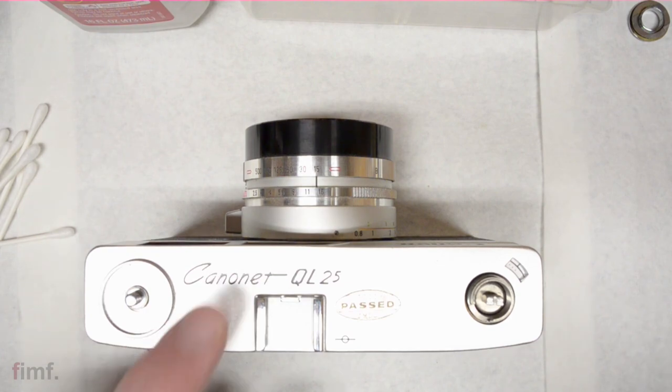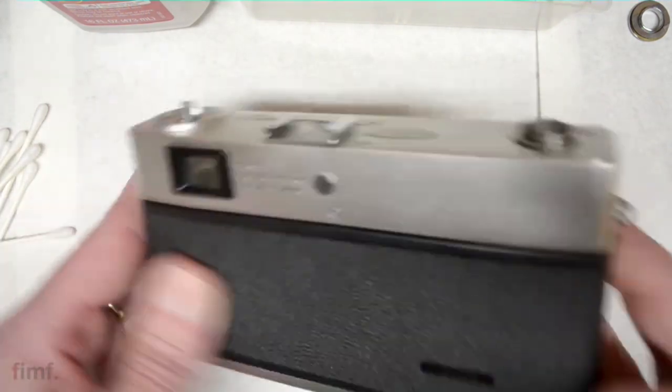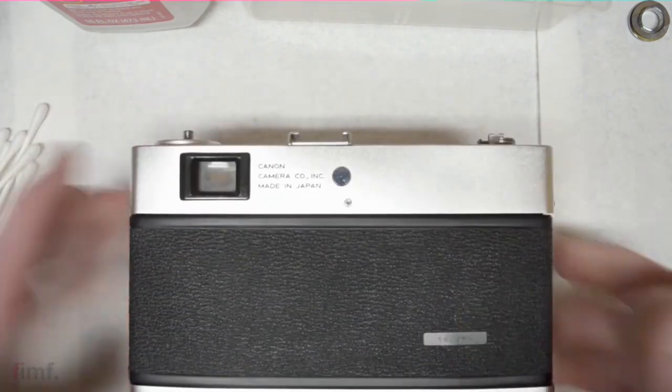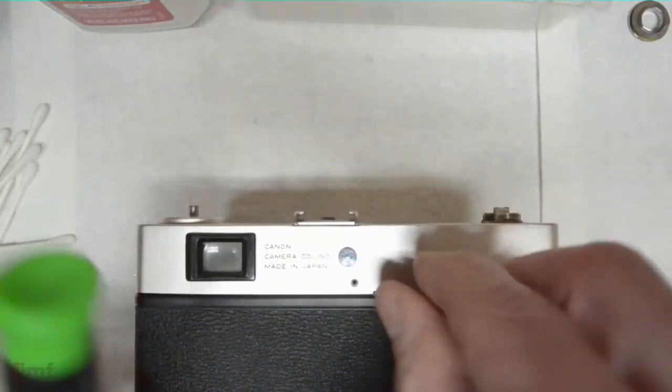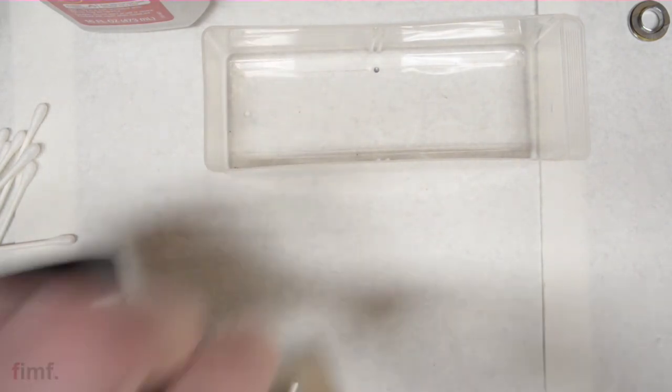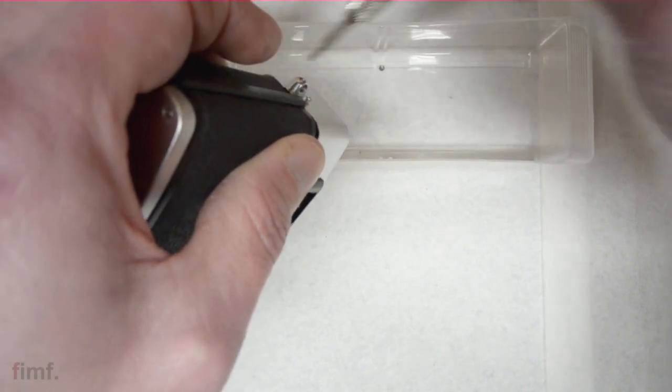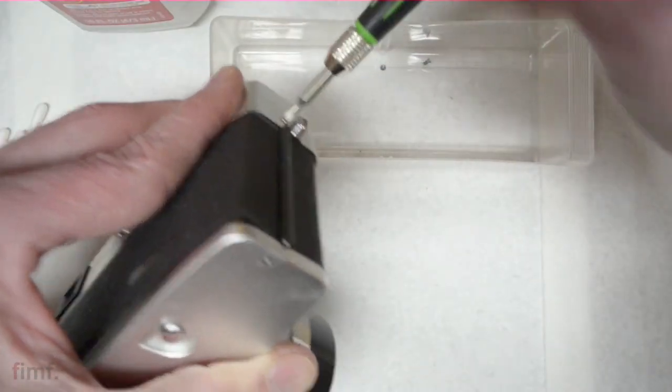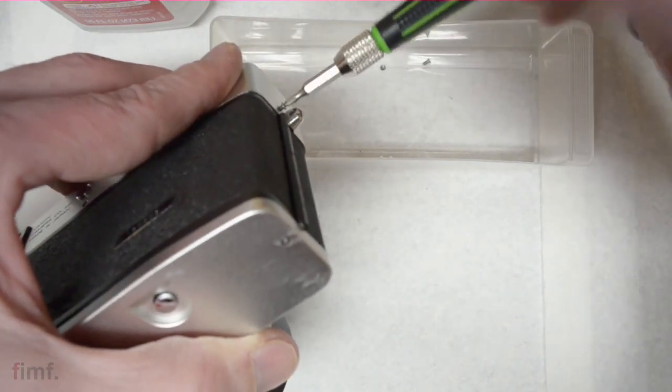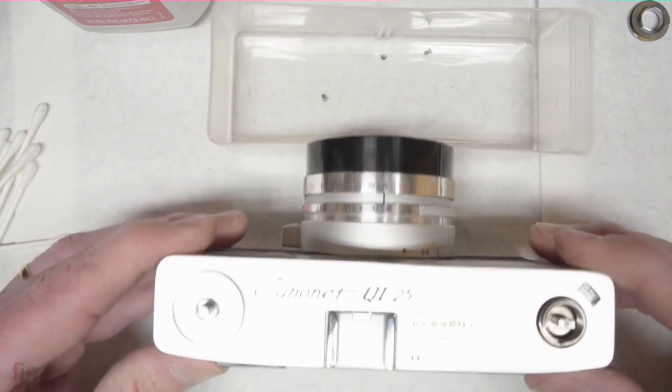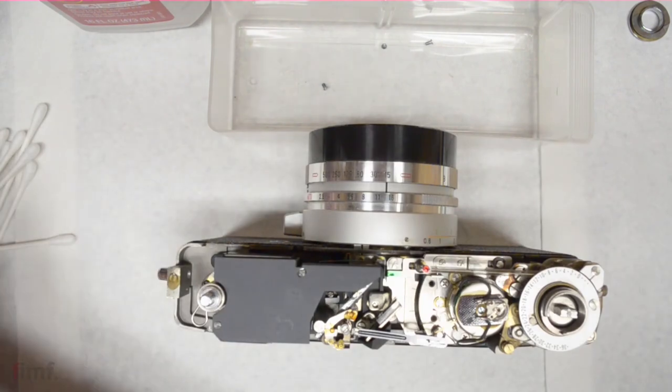There's three screws that will allow us to lift this top off. One is directly on the back, here's one, there's the other. Go ahead and take your double zero Phillips and make sure that they go into that box because they are super tiny. I've lost screws like this before and it sucks trying to find them. With those three out, this will lift straight up very carefully.